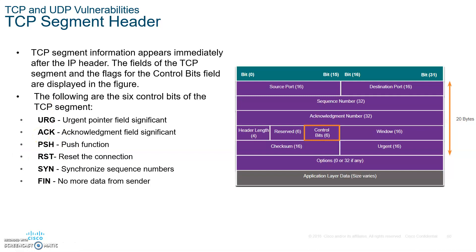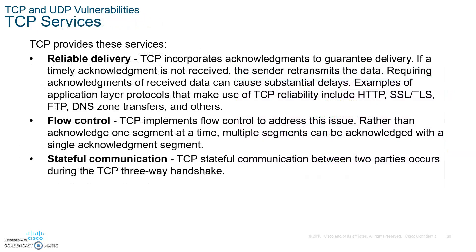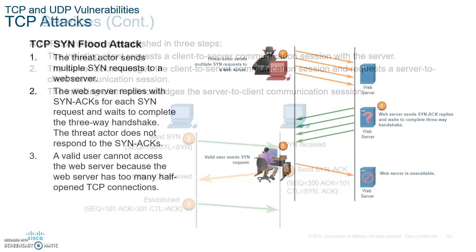TCP is reliable, uses flow control, and is connection-oriented — that's what stateful communication means. It does the three-way handshake. Reliability means the receiver checks the segments and if they're not good, asks the sender to retransmit. Flow control means the receiver tells the sender to either increase or decrease the amount of data being transmitted.